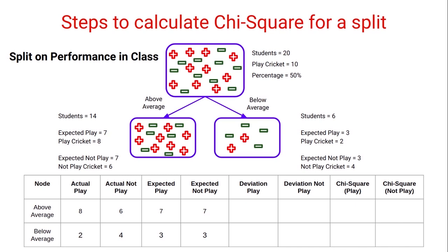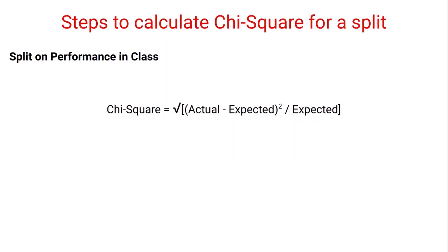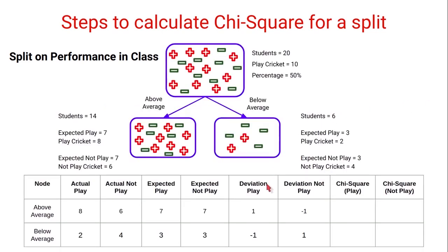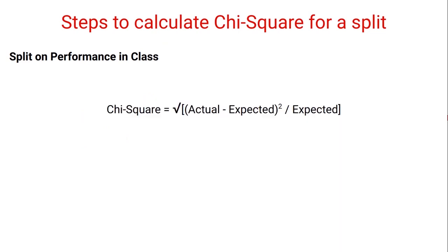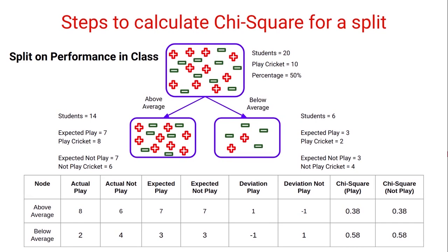Next, we calculate the deviation of actual values from the expected values for both classes. So 8 minus 7 gives us 1, and 6 minus 7 gives minus 1. We do the same for the below-average node — you can pause the video to check these calculations. Finally, we calculate the chi-square values using the formula: we square the deviations, divide by the expected values, and take the square root of those values.